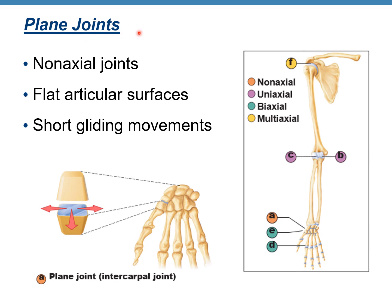Plane joints are non-axial joints with flat articular surfaces and short gliding movement. On the diagram you can see two bones that come together forming a joint and just slightly glide across each other. An example of a plane joint is intercarpal joints — the joints between carpal bones. In non-axial movement, the angle between the two bones never changes — like sliding a book along a desk.